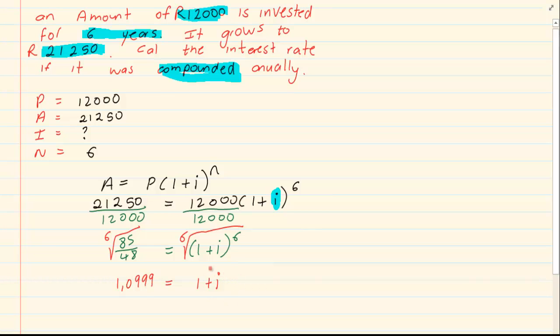Then it is a matter of solving for I. So, we are going to take our 1 over and subtract. So, we would have I is equal to 1.0999 subtract 1, giving us that I is equal to 0.0999.